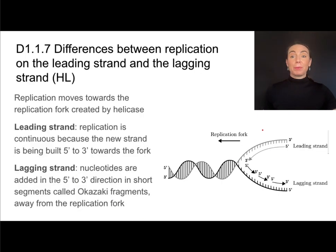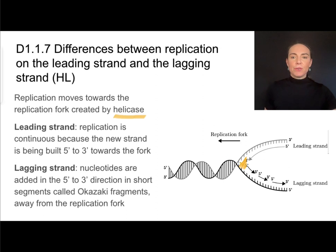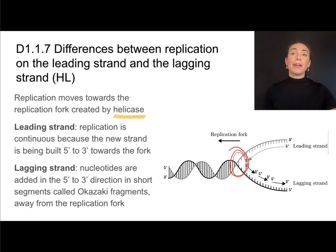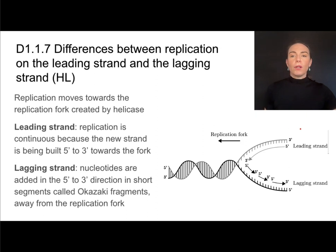Let's take a look at replication in real time. Imagine DNA helicase — the enzyme that breaks hydrogen bonds — is working right here, breaking these hydrogen bonds and moving in this direction. This creates something called a replication fork, which is the point of separation between the strands. Replication moves in the direction of that replication fork, so overall replication will be happening this way. On the leading strand, synthesis is continuous.